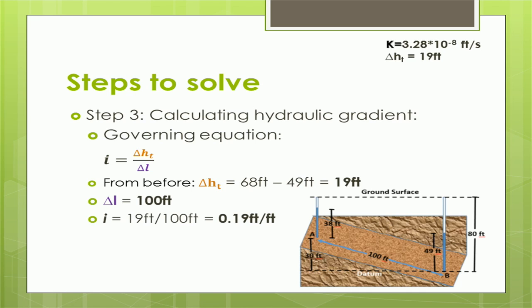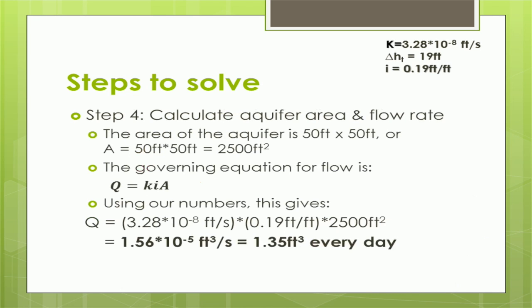This states that for every foot of length along the aquifer, there is a 0.19-foot drop in head. Next, we calculate the aquifer area and rate of groundwater flow. The area of the aquifer in the direction of flow is 50 feet by 50 feet, which gives a 2,500 square foot area. Now that we have everything we need, we can solve for the flow rate using Q = KIA, Darcy's Law. The flow rate is then 1.56 × 10⁻⁵ cubic feet per second, or 1.35 cubic feet per day. We can see from this example that this is not a lot of water, which mostly has to do with the very low coefficient of permeability.